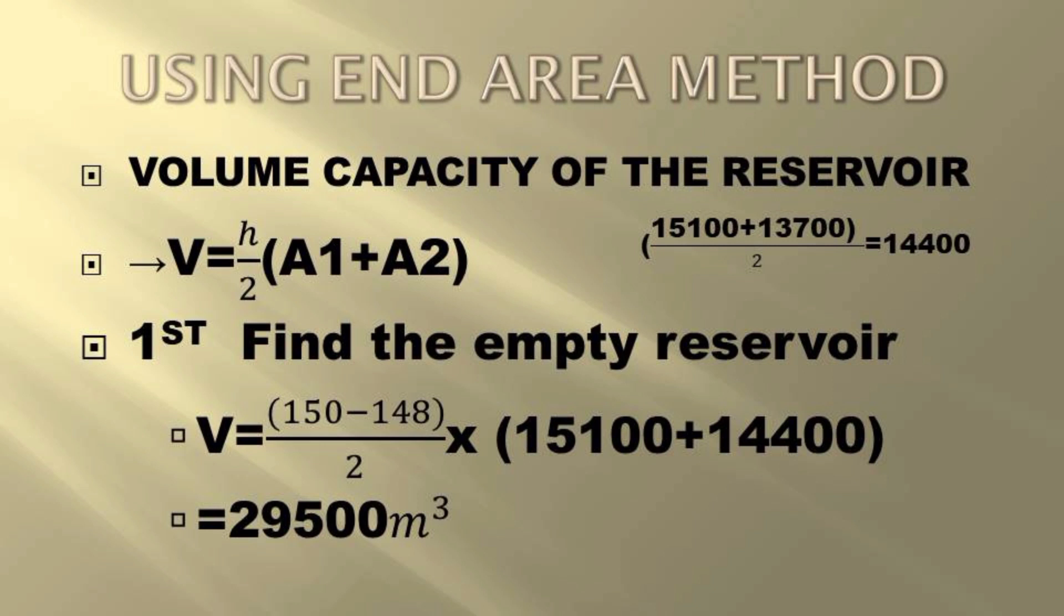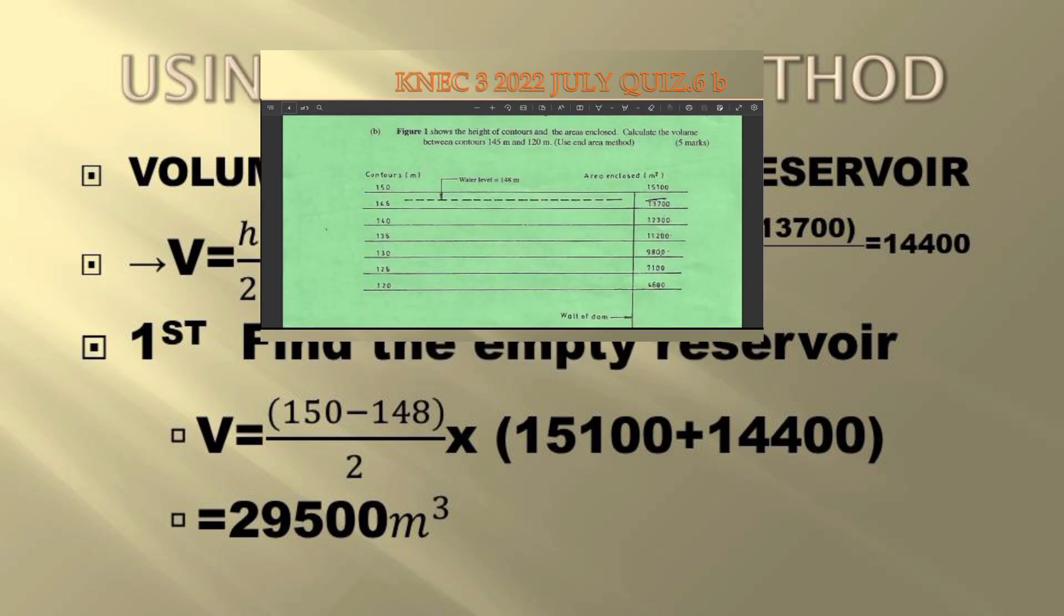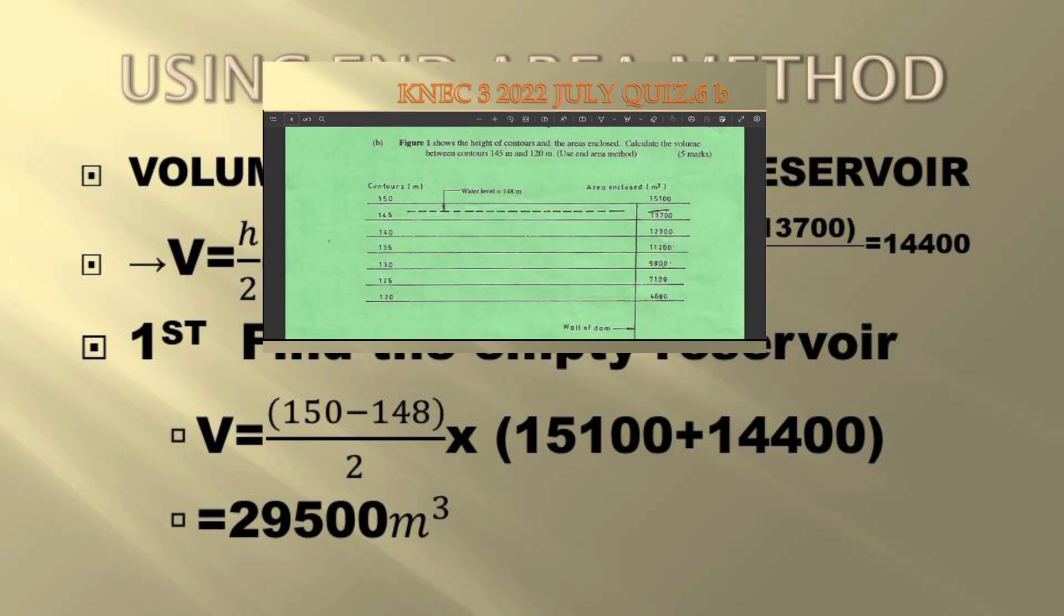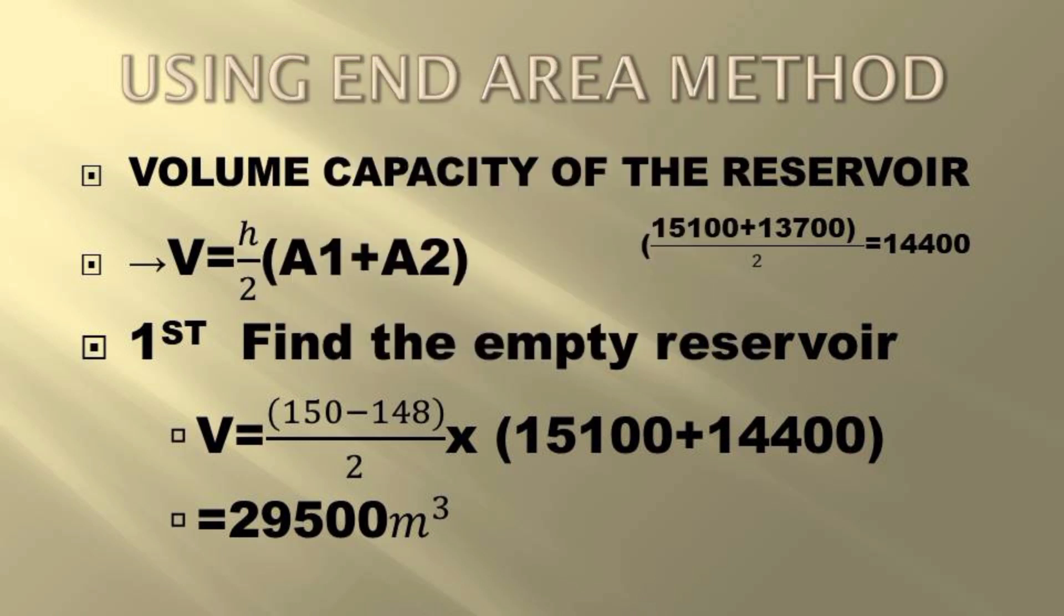The answer is divided by 2, after which we multiply the sum of the two enclosed areas. First, we find the empty reservoir. The empty reservoir lies in the contour 150 to the contour 148, where our water level reaches. Going back to the formula, V will equal the height difference, the contour interval.